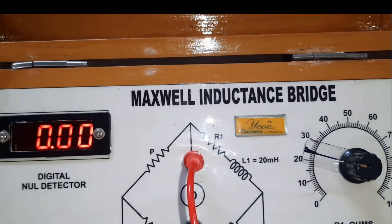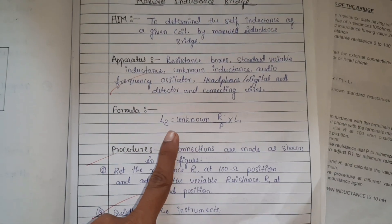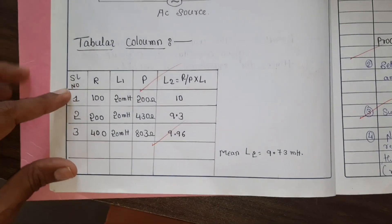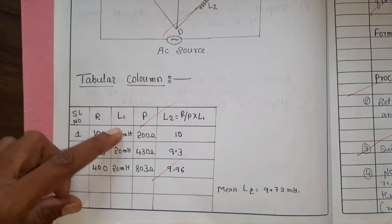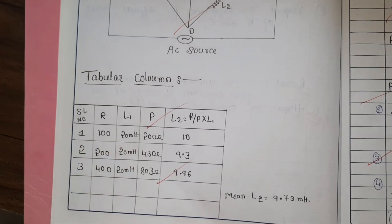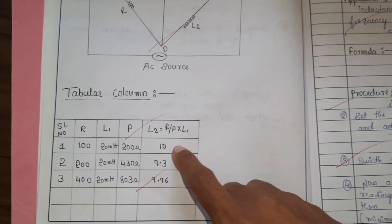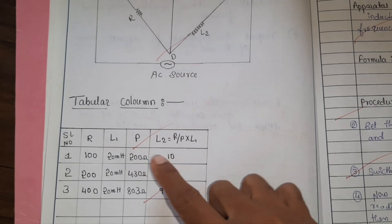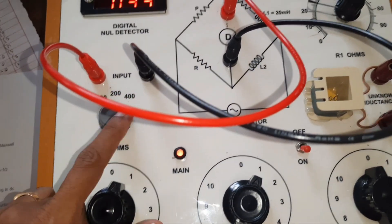Finally you need to get the null detector value around 0 or 0.08. The formula to calculate unknown inductance is: L2 = (R / P) × L1. In the tabular column, write the three values of R, L1 fixed at 20 millihenry, and the noted value of P — we got around 220 ohm, approximately 200 ohm. Using R divided by P multiplied by L1 gives the unknown inductance for R = 100 ohm. Repeat for R = 200 and 400 ohm.